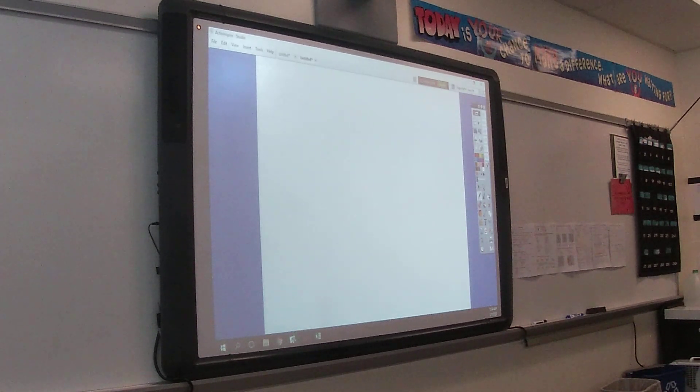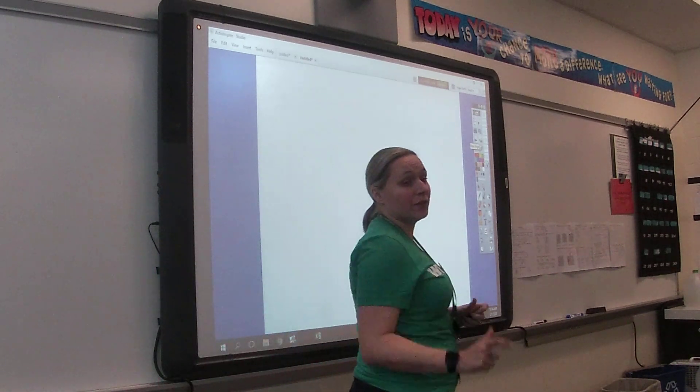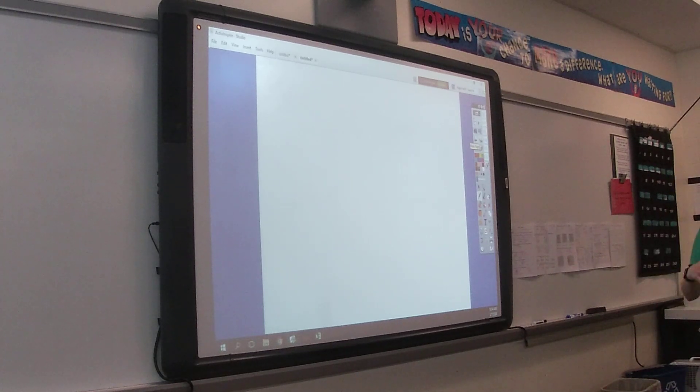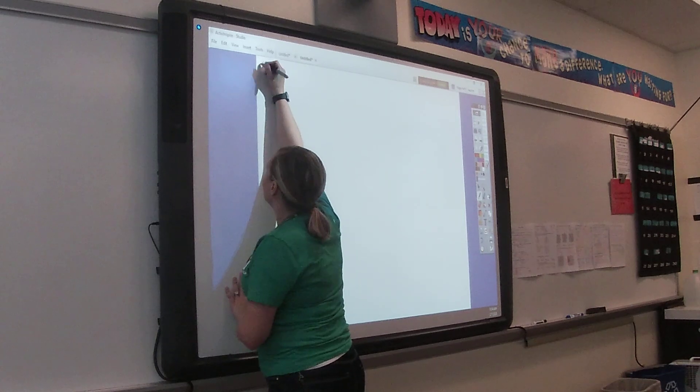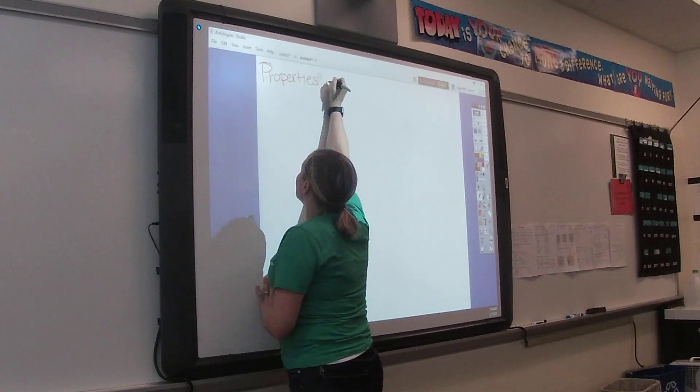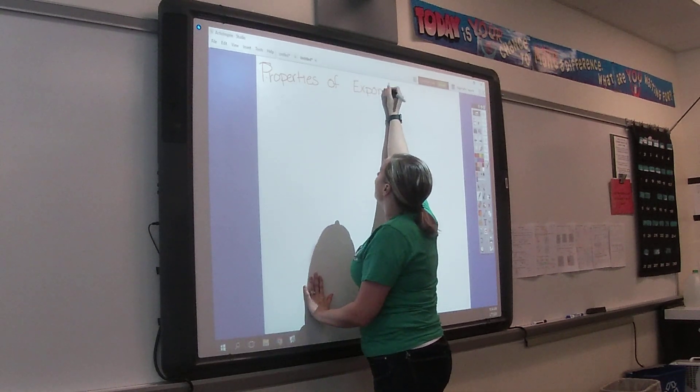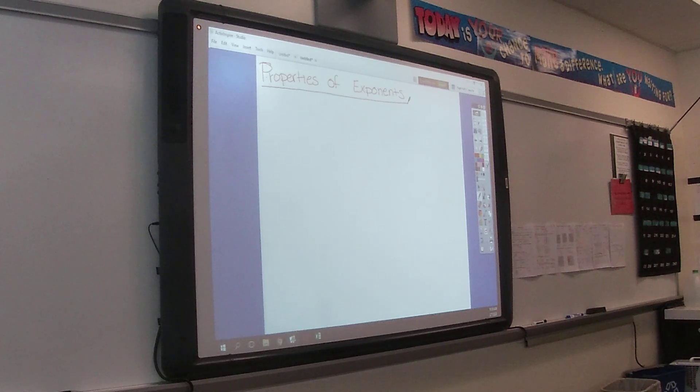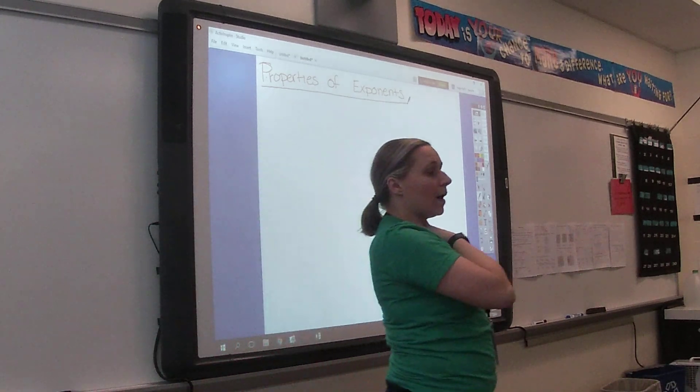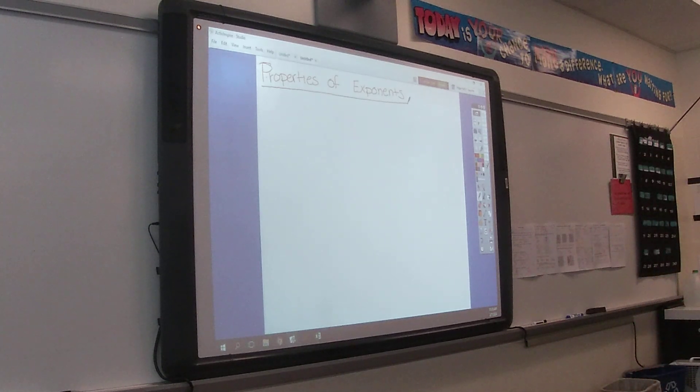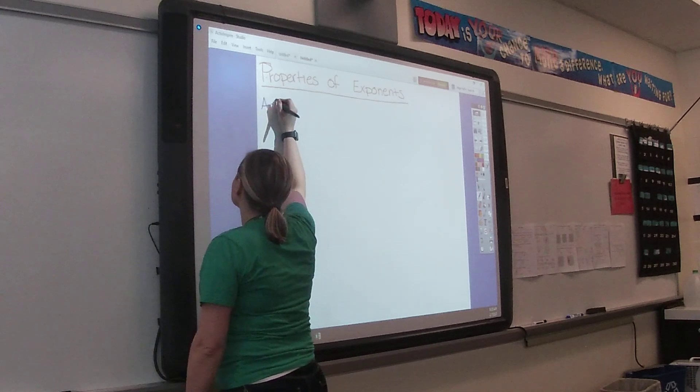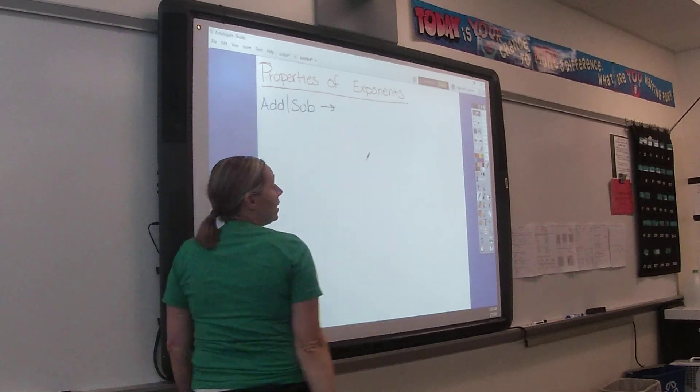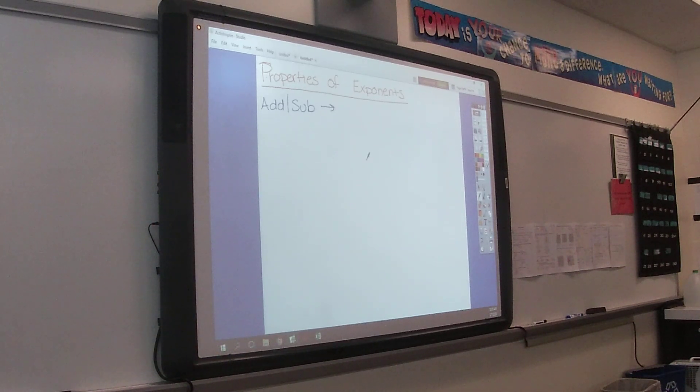Then after we did systems, we went into our polynomial unit, and this is where most of my students like to have the cheat sheet. Those properties that are sort of all wonky from our normal rules. If we are adding or subtracting with exponents, what do we do with them? Nothing. We keep them the same.